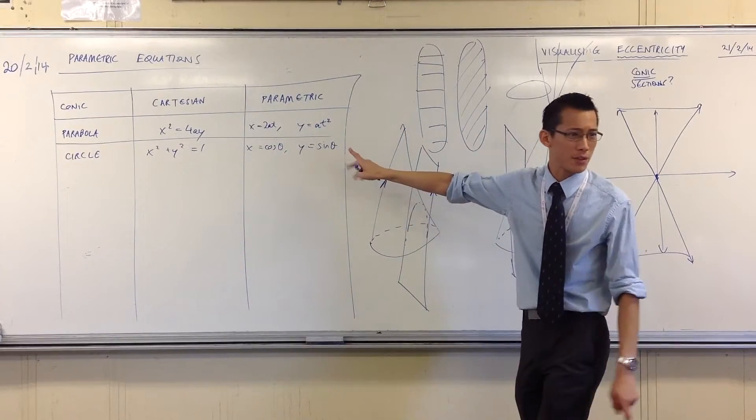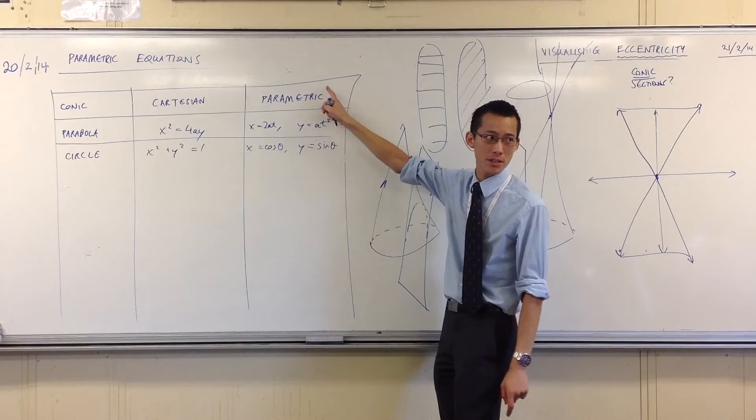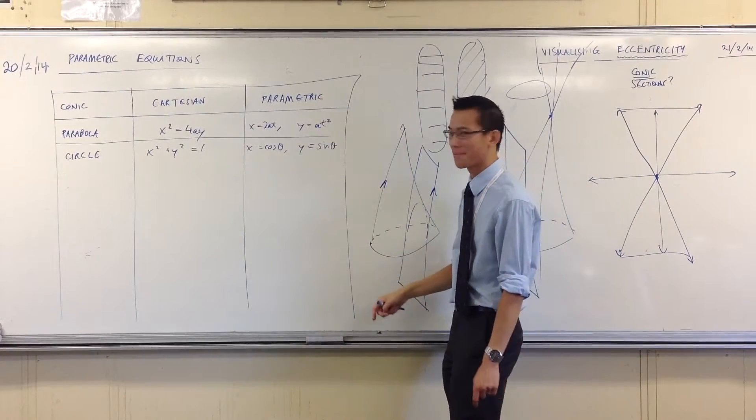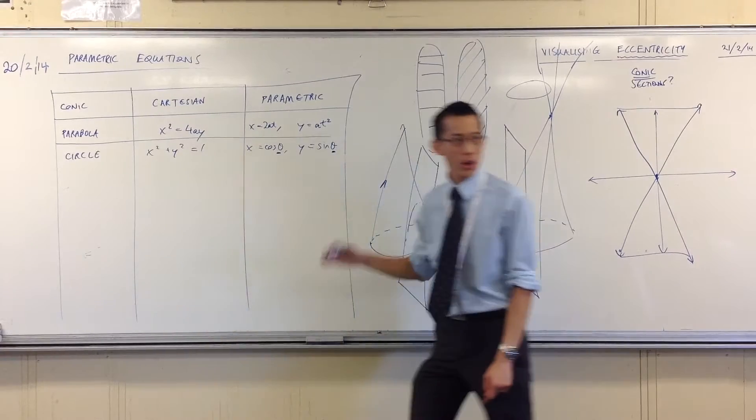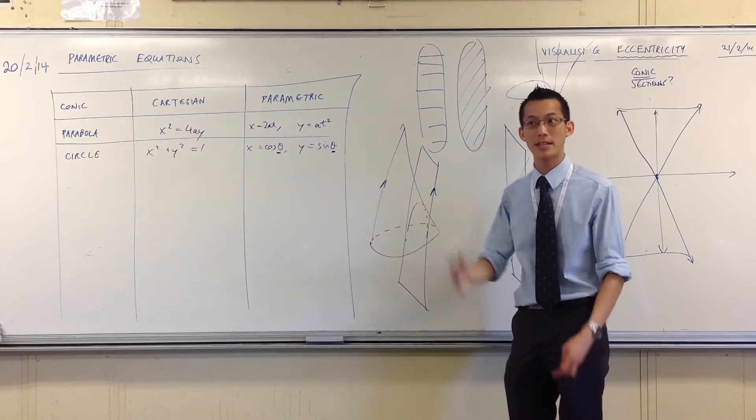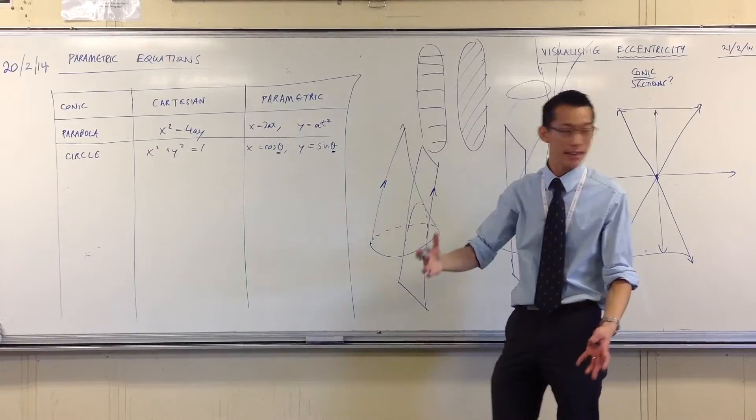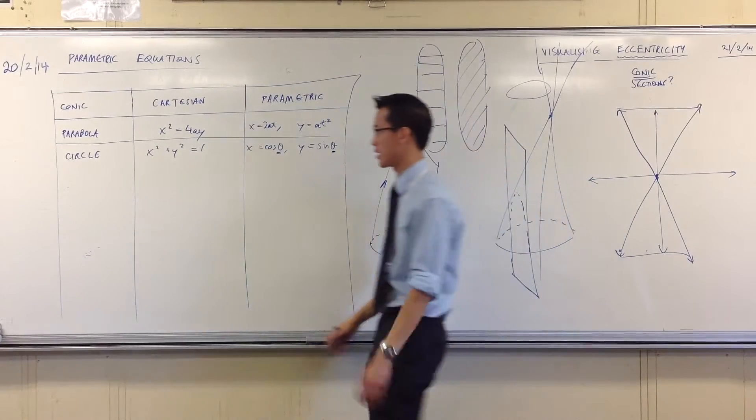Now, we actually gave it a different name. Do you remember what we called it? We didn't call it parametric equations. Because it has to do with this angle. We often called them polar coordinates, because that defines things in terms of angle and radius. So we'll revisit that word in a second.